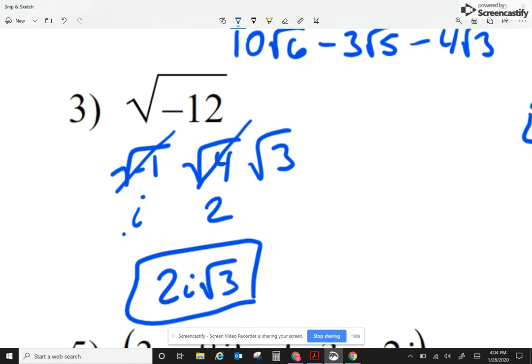When we have on the outside a number and an i, we write the number first. So 2i radical 3.